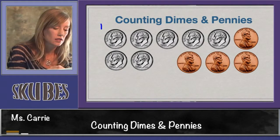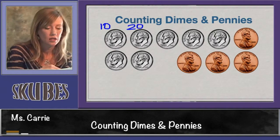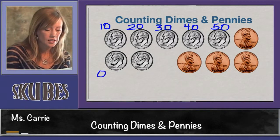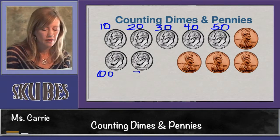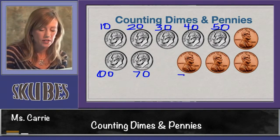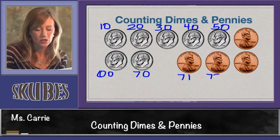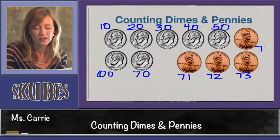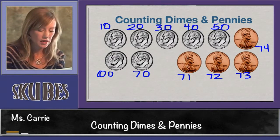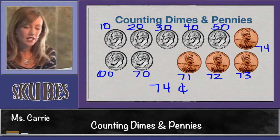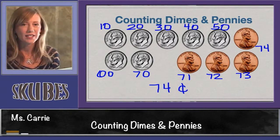Ten, twenty, thirty, forty, fifty, sixty, seventy. We're going to stop with tens and move to ones now: seventy-one, seventy-two, seventy-three, seventy-four. This group of coins equals seventy-four cents. This concludes our lesson today on counting dimes and pennies.